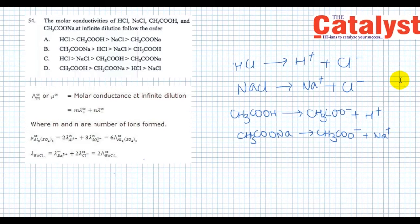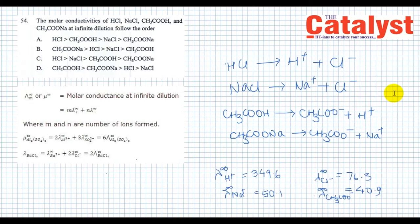To answer this question properly, one should remember that H⁺ has exceptionally high value of molar conductance—that is 350 units—and Cl⁻ shall have higher value of molar conductance because of smaller size of chloride ions. Here are the values: molar conductance at infinite dilution for H⁺ is 349.6, chloride ion is 76.3, for sodium⁺ it is 50.1, and for acetate ion it is 40.9.